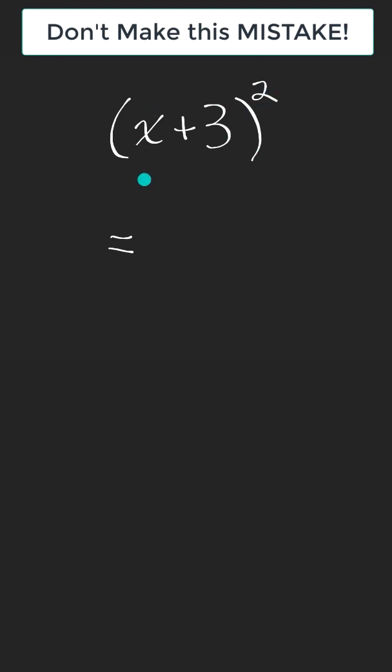The base of my power is being squared. I can just put this exponent 2 on the x and the 3. So I've got x squared plus 3 squared.